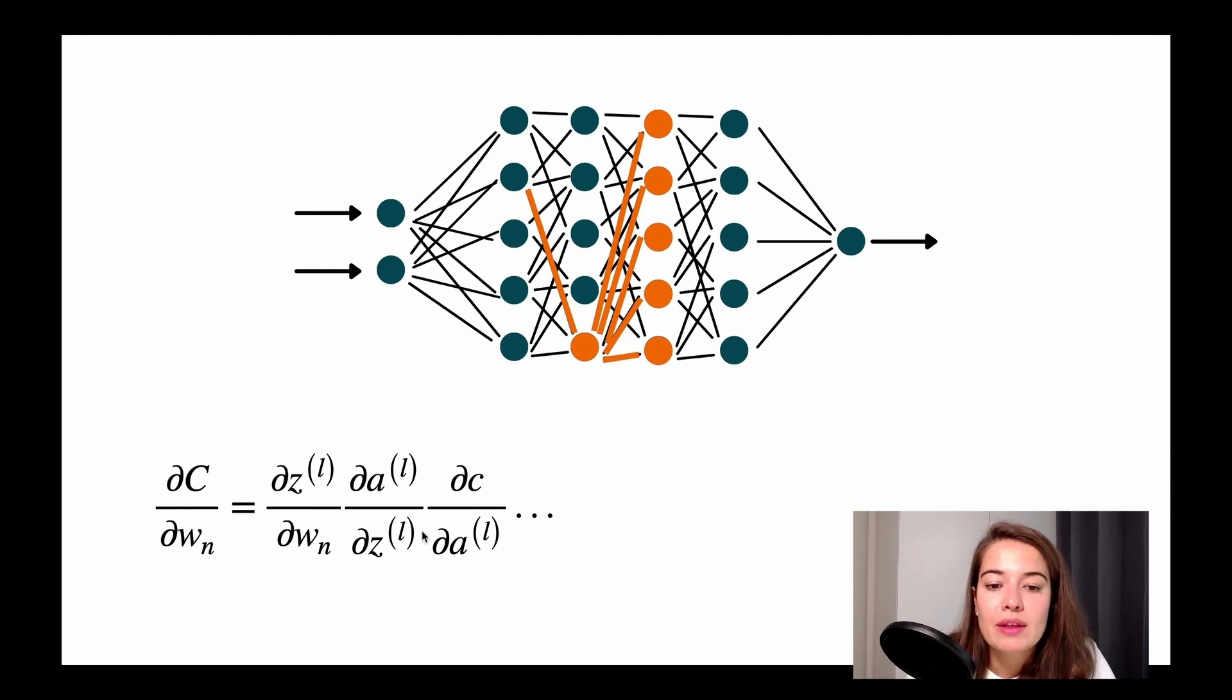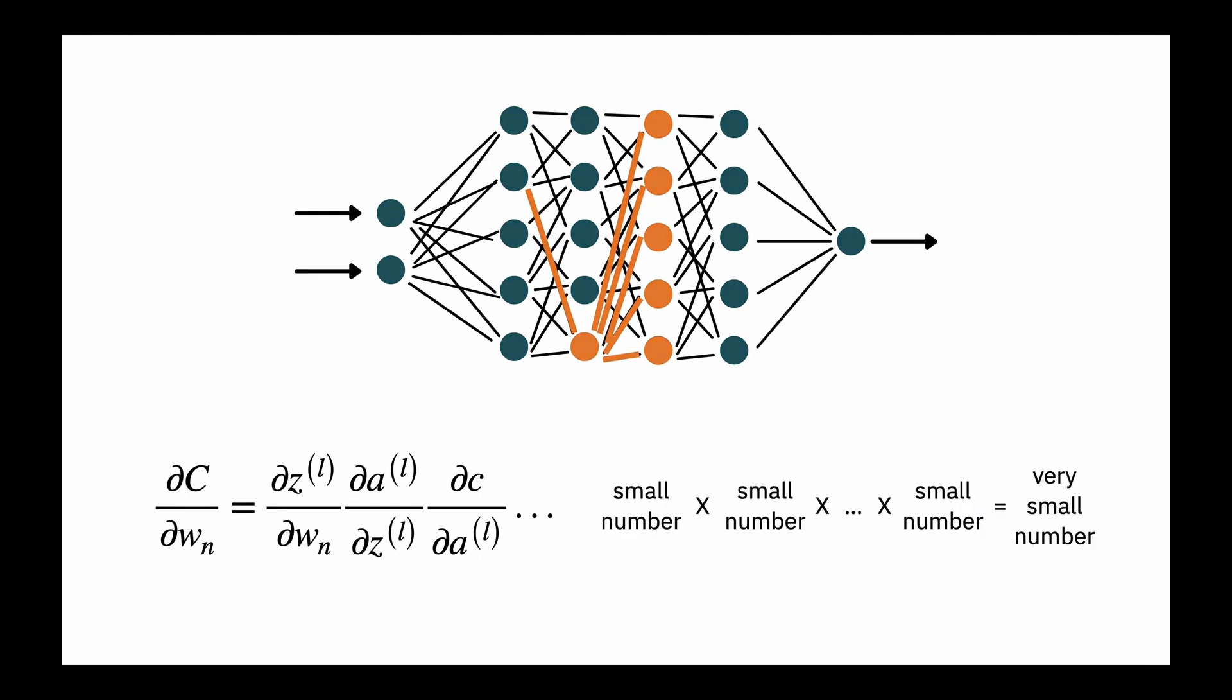And what happens is, sometimes these values are very small. And by very small, what I mean is lower than one, so smaller than one. So what can happen if you multiply a lot of small numbers, a lot of numbers that are smaller than one, what you're going to end up getting is going to be a very, very small number. And this very small number is going to be the number that you're going to update your weight with. But because it's very small, it's not going to update your weight very well.